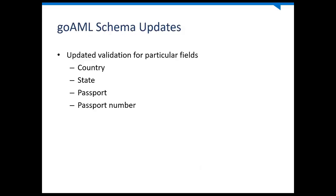In terms of the 5.4.1 release, we made changes to update the reports based on updates done by the regulator. They made changes regarding fields like country and state, and introduced the passport — for which you have to supply a passport number. We had to update the validation to make sure that once persons submit the reports, they will not be rejected because these fields are not being validated properly or filled out. That's the GoAML schema updates for version 5.4.1.